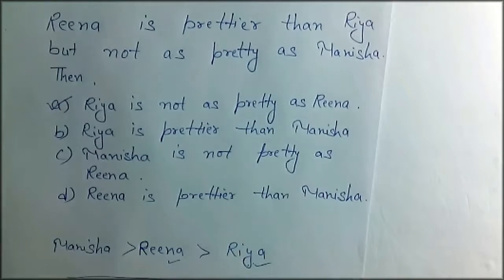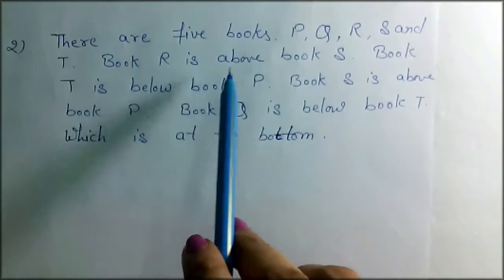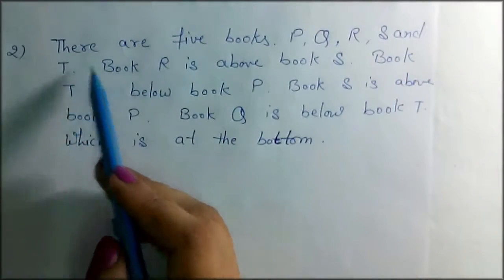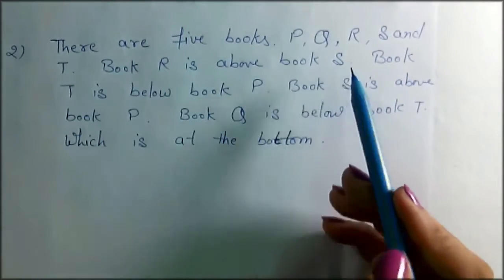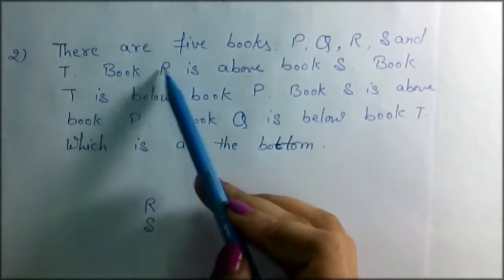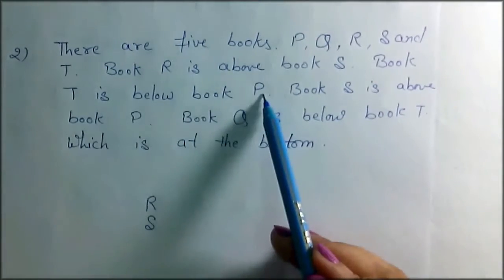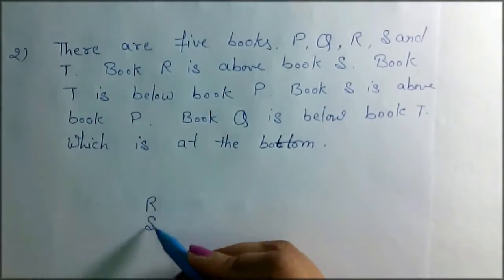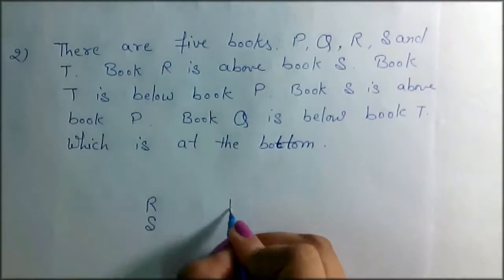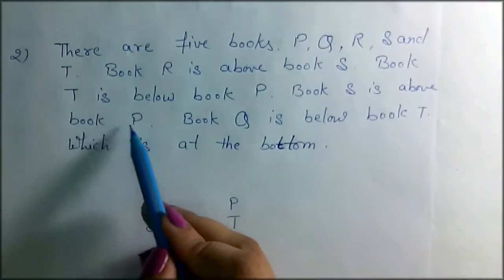Next question: There are five books — P, Q, R, S, and T. Book R is above book S. Book T is below book P. Book R is above book P. Book S is above book P.